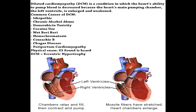Some common causes of toxin-induced damage include chronic alcohol abuse, doxorubicin toxicity, as well as cocaine use. Other causes of dilated cardiomyopathy include wet beriberi and hemochromatosis. Infectious agents can also cause dilated cardiomyopathy, including Coxsackie B virus and Chagas disease.